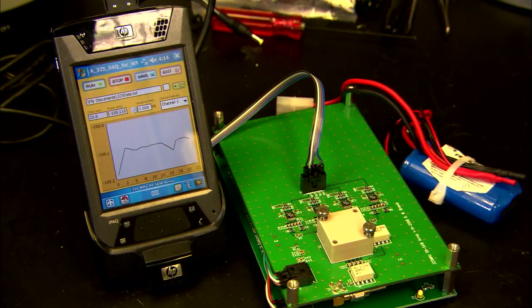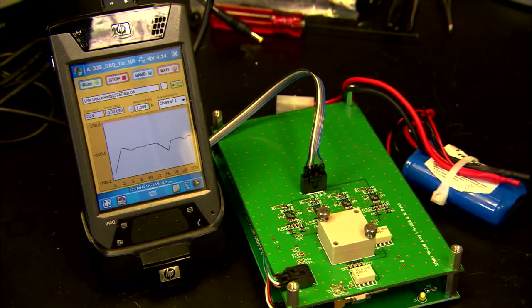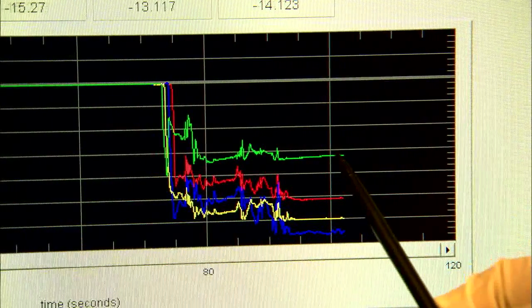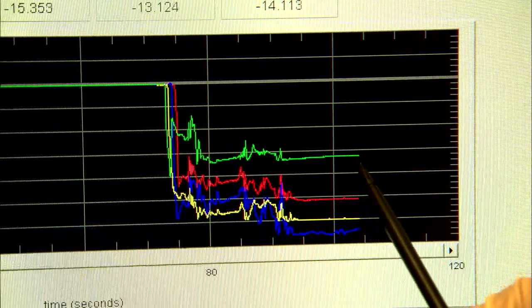If the mass on the surface goes up, the velocity goes down, and you can actually detect that change. That's the principle of operation for the device.